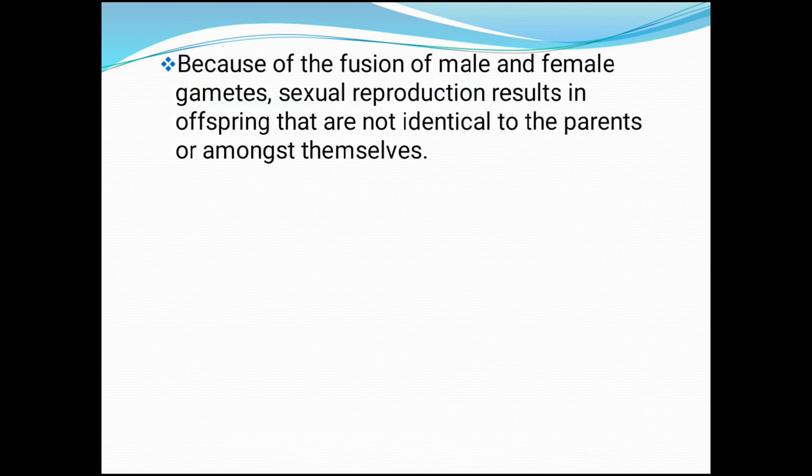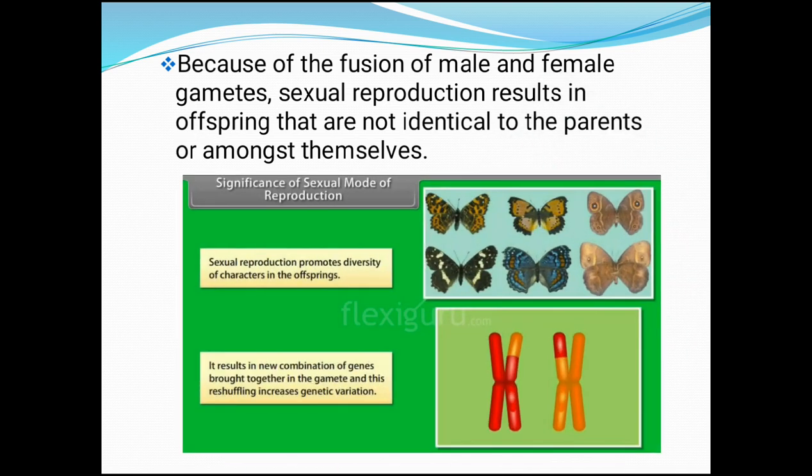Because of the fusion of male and female gametes, sexual reproduction results in offspring that are not identical to the parents or amongst themselves. That means the progeny which are formed by sexual reproduction are dissimilar.